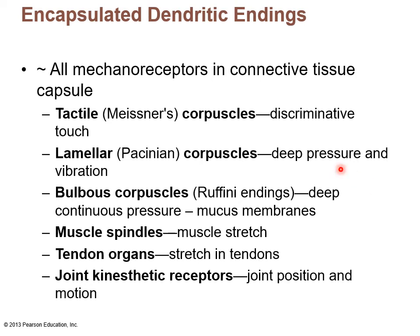Encapsulated dendritic endings include tactile corpuscles in the upper part of the dermis, deep pressure receptors called lamellar or Pacinian corpuscles deep in the dermis, and bulbous corpuscles — Ruffini endings — found in mucous membranes so you can feel food going through the esophagus. Muscle spindles in muscle cells respond to the degree of stretch, tendon organs do the same in tendons, and kinesthetic receptors in the joints indicate joint position and motion.